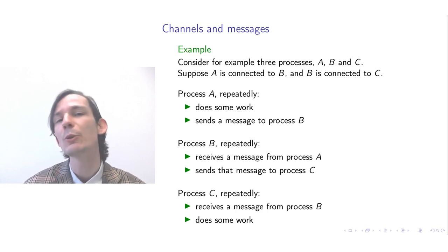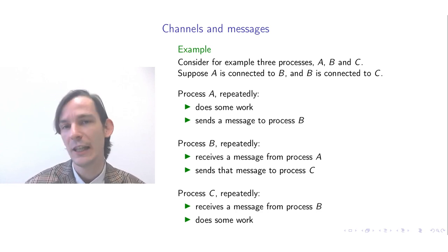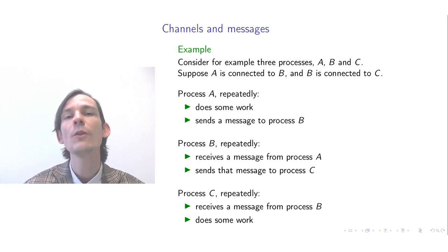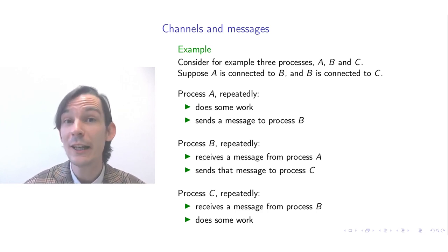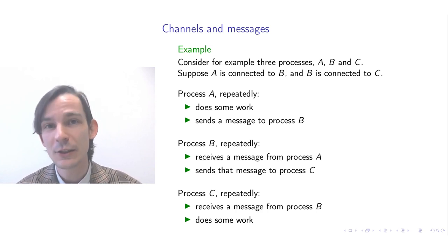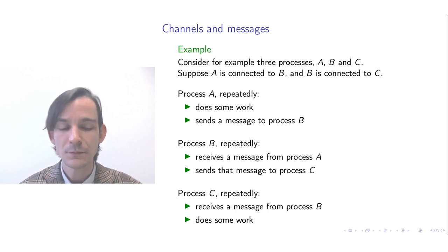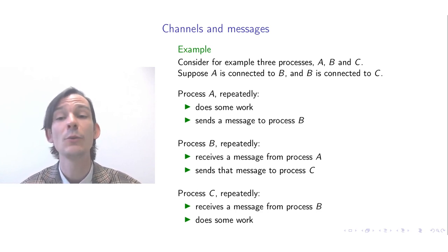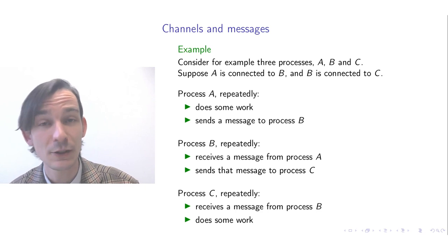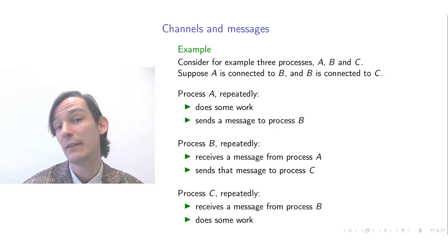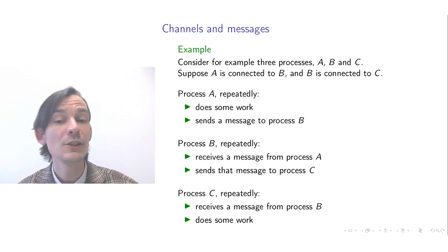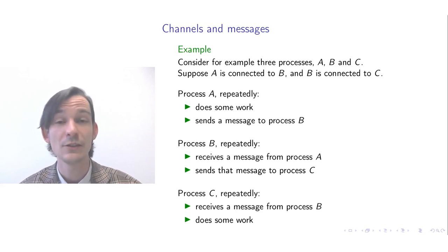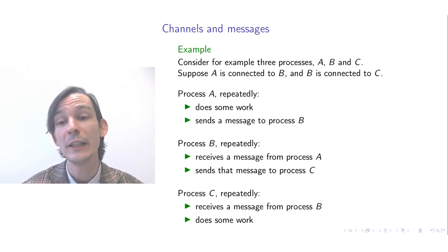How do these processes exchange messages? Between A and B there is a channel, and between B and C there is a channel. Whenever process A wants to send a message to process B, it has to interact with the channel. And whenever process B wants to receive a message from process A, it has to also interact with that same channel between A and B.